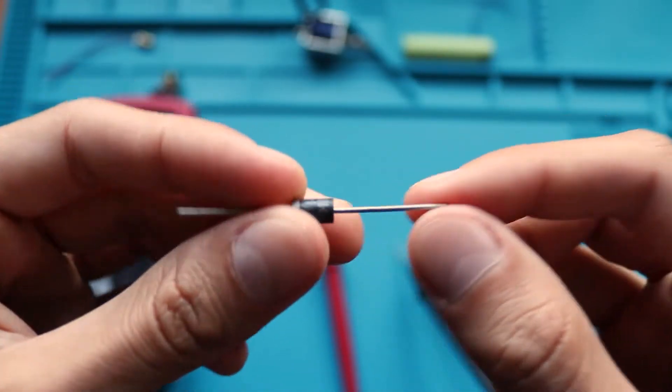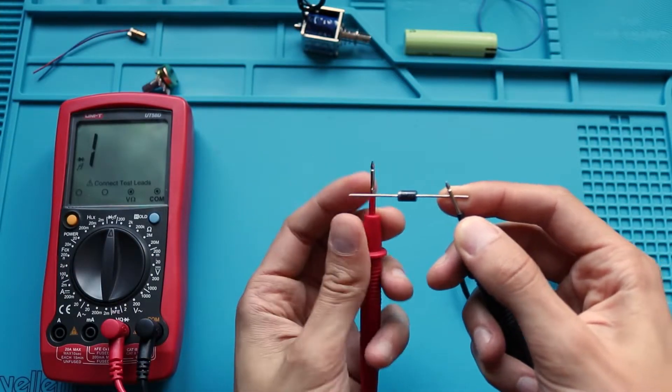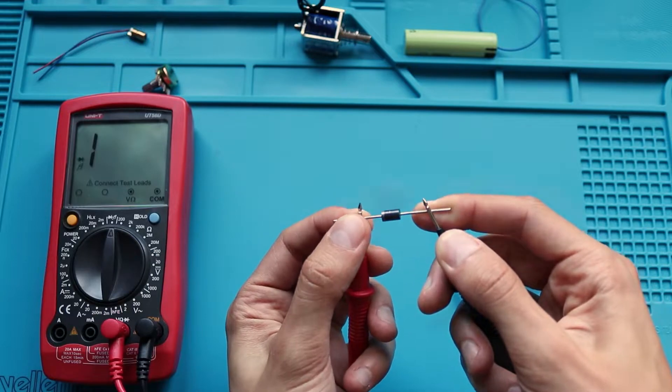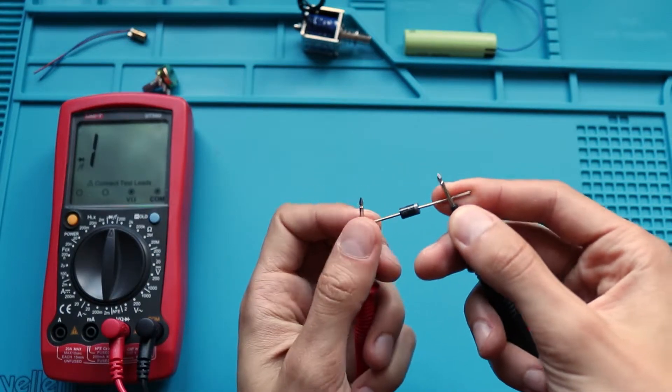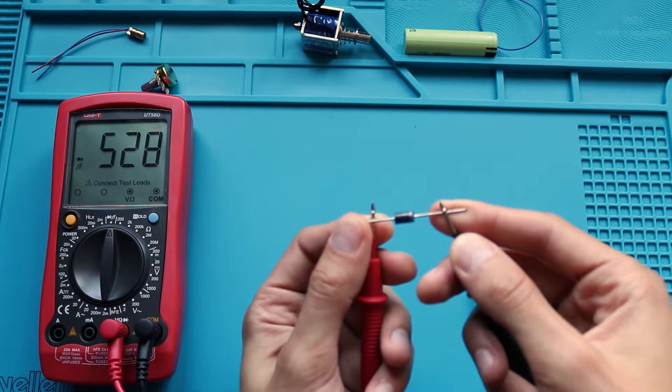For example, I have a diode here. And as you can see, we read infinite resistance when we apply plus to the anode and minus to the cathode. But if we reverse it, we will read some value. In that way we can check where is the anode and the cathode, and also we can check for a diode breakdown.